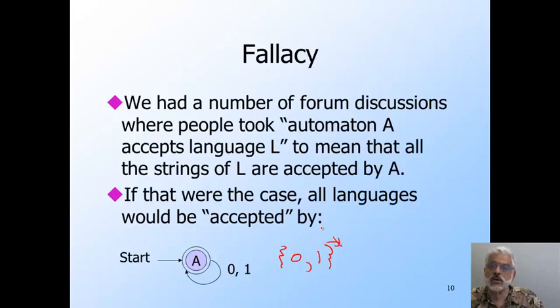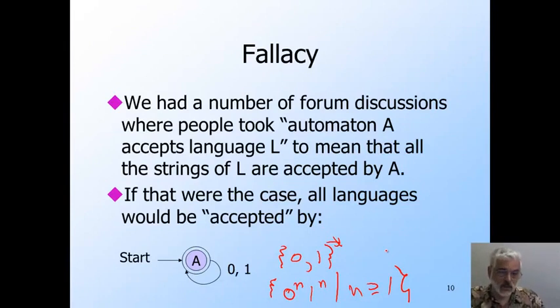If you don't see the difference between accepting strings and accepting a language, you would erroneously conclude that this automaton accepts every language whatsoever, such as the set of 0 to the n, 1 to the n, such that n is equal to or greater than 1. It doesn't. It accepts this language, the set of all strings of 0s and 1s.